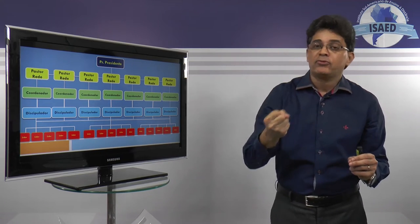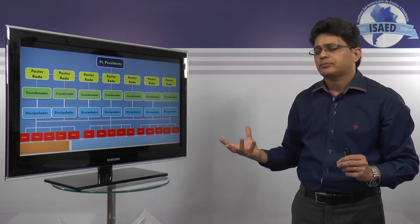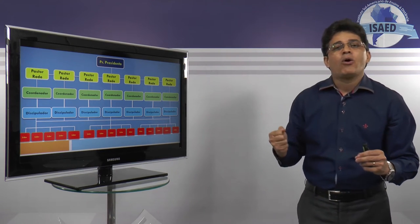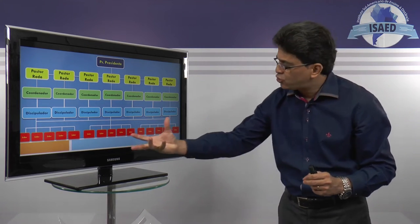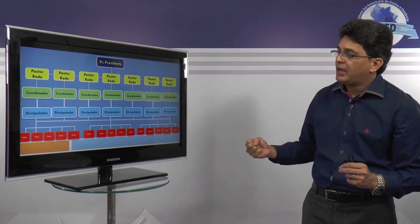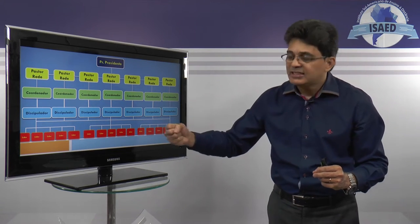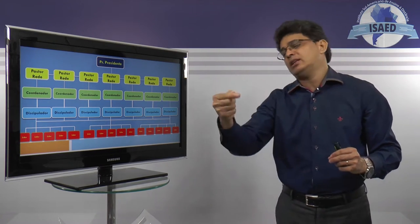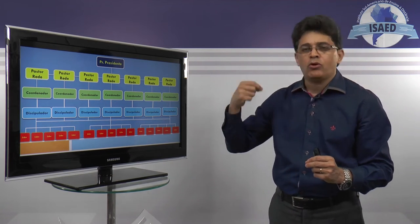Eu já falei bem, enfatizei profundamente nas aulas anteriores acerca dessa temática. Então, na medida que os líderes vão se desenvolvendo, multiplicando as suas células, nasce agora a necessidade de se ter um discipulador, um supervisor, para que possa supervisionar exatamente esses líderes. Aqui nós temos cinco líderes supervisionados por um discipulador, em que um dia esse discipulador foi um líder de célula.